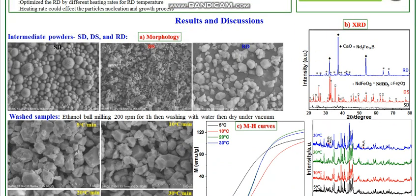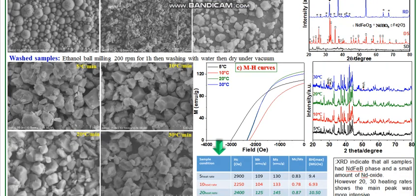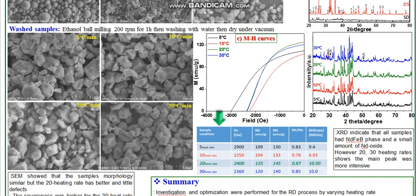Three stages are shown: the spray dried powder, desalted powder, and RD powder. XRD analysis of the spray dried, desalted, and post-RD samples shows that after crushing the RD pellet, calcium oxide appears as a by-product along with NdFeB particles. After ethanol ball milling at 200 RPM for 1 hour followed by dry vacuum, the final particles are obtained.